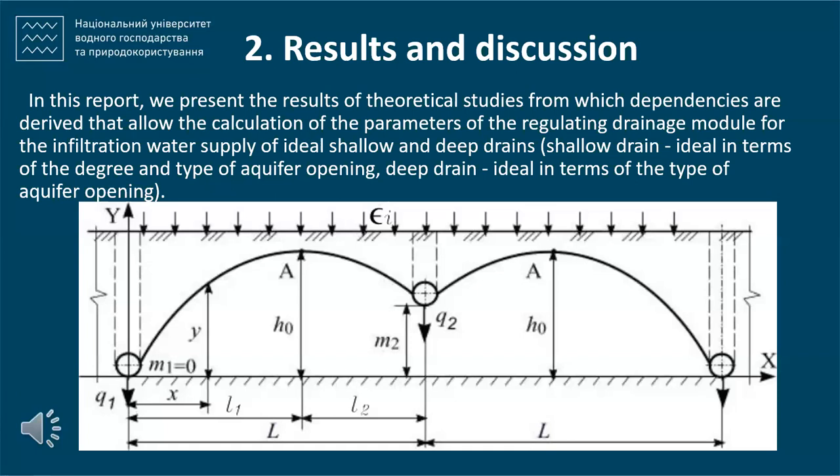In this report, we present the results of theoretical studies from which dependencies are derived that allow the calculation of the parameters of the regulating drainage module for the infiltration water supply of ideal shallow and deep drains. A shallow drain is ideal in terms of the degree and type of aquifer opening; a deep drain is ideal in terms of the type of aquifer opening.